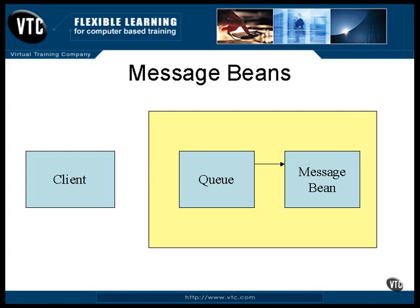The bean then retrieves the message from the queue. There could actually be several beans of the same class taking messages from this queue — there's a pool of message beans, and each incoming message gets its own copy of a bean from the pool. The message coming to the bean causes the on-message method to be called with the message content as its argument.